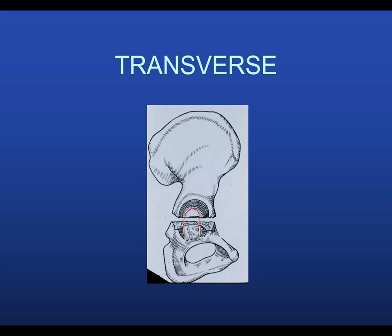A pure transverse fracture goes exactly horizontally through that. These can be infratectile — if they're down here — infratectile, juxtatectile, transtectile, with respect to where they are in relation to the weight-bearing dome. Because more displacement at the weight-bearing dome means you have to be more critical and anatomic with your reduction.